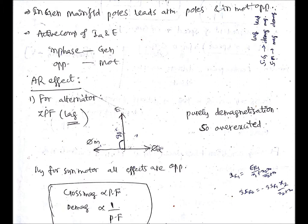You just draw the phasor diagram and from that you can get these conclusions. Also note: the cross-magnetizing effect is directly proportional to the power factor, and the demagnetizing effect is inversely proportional to the power factor. Thank you.